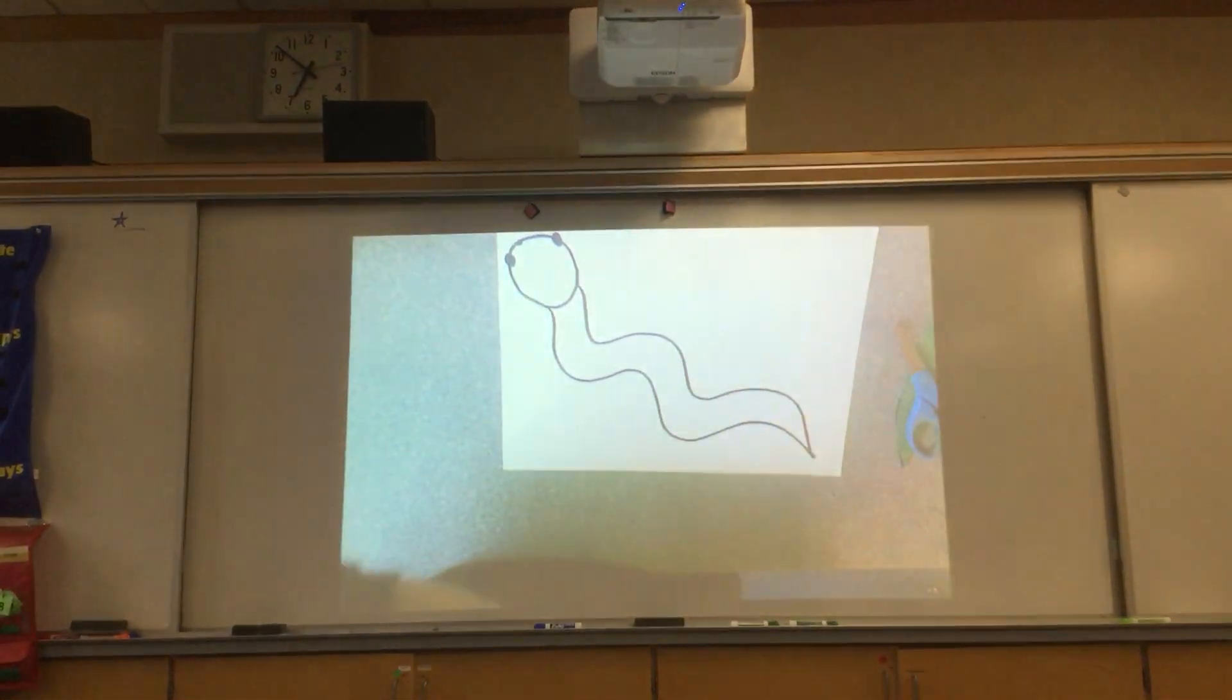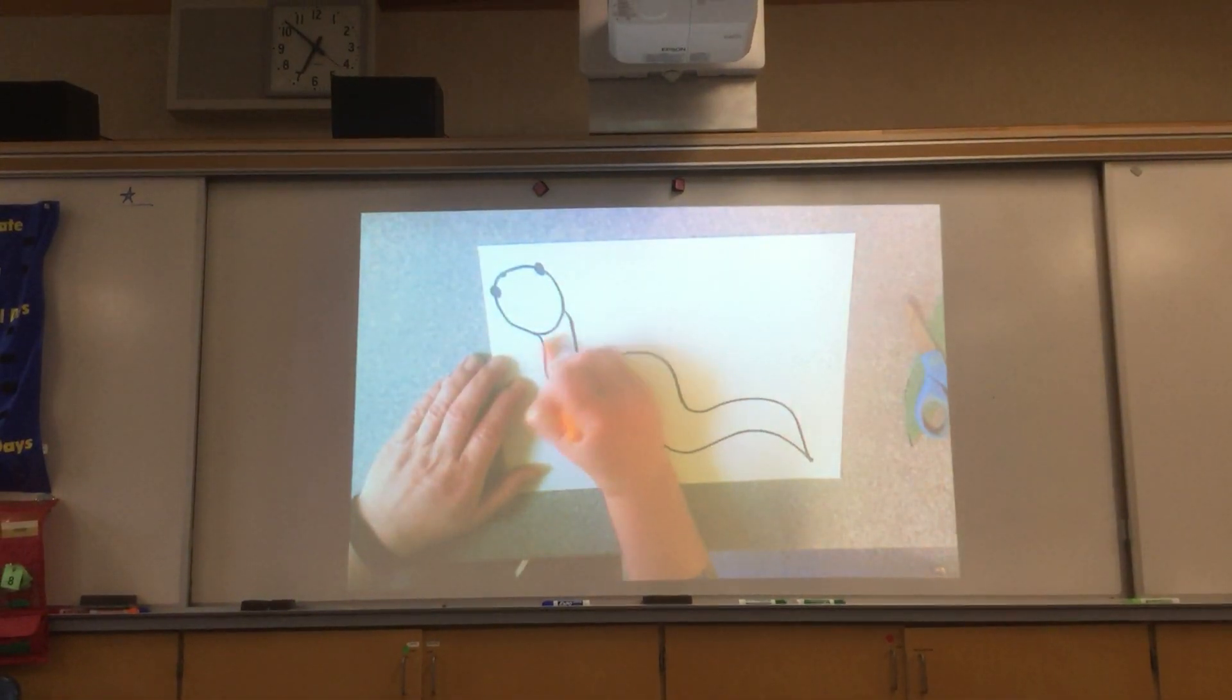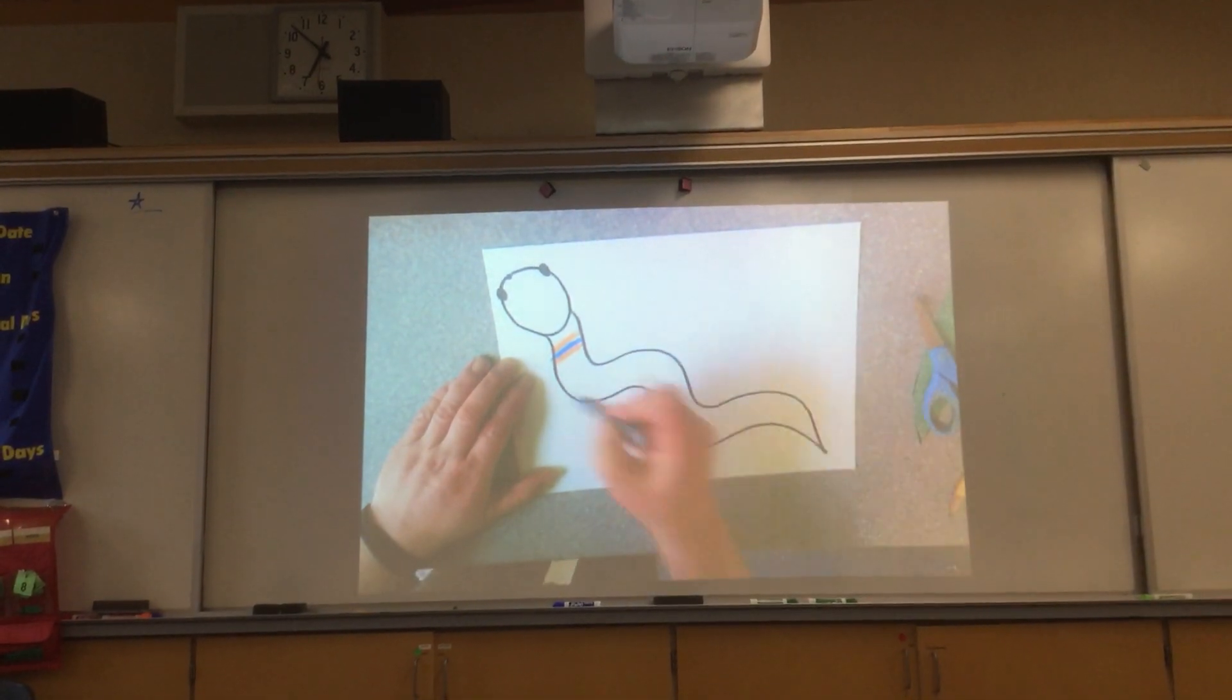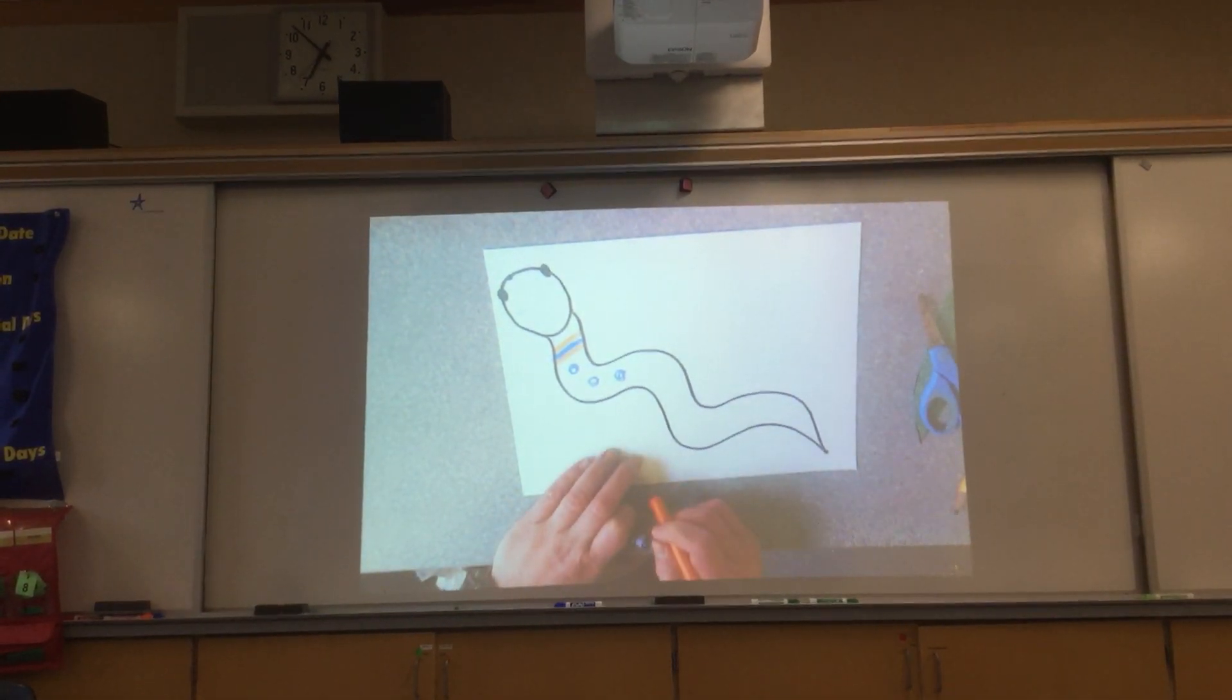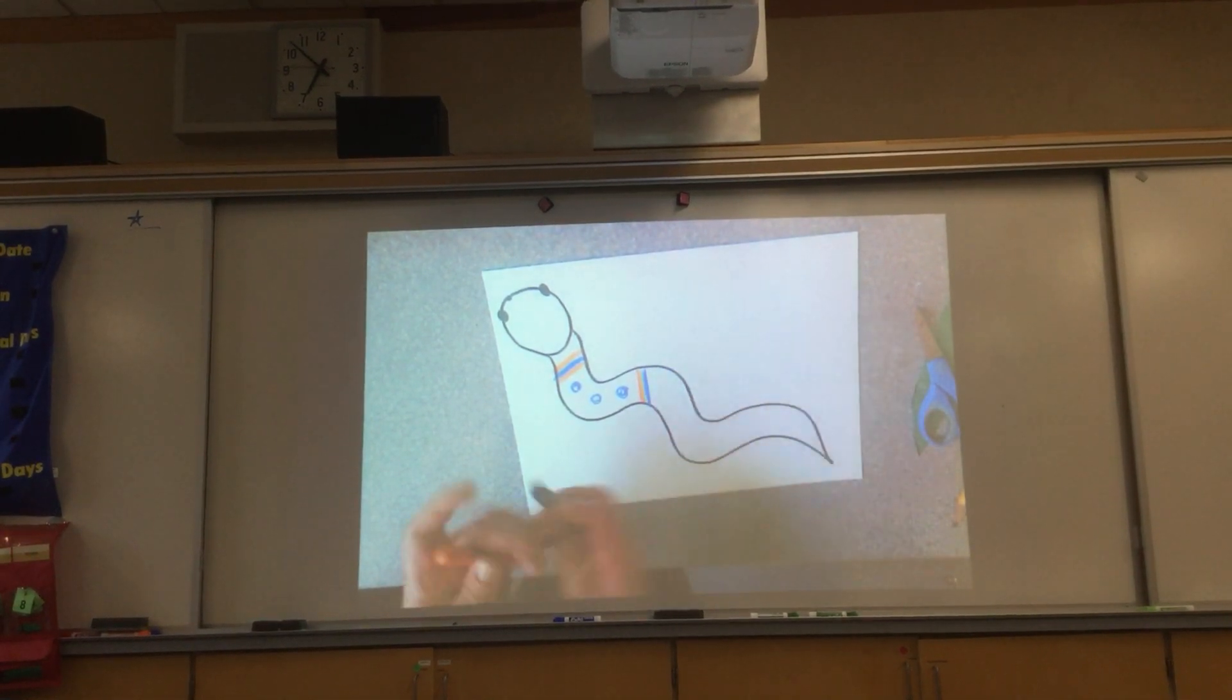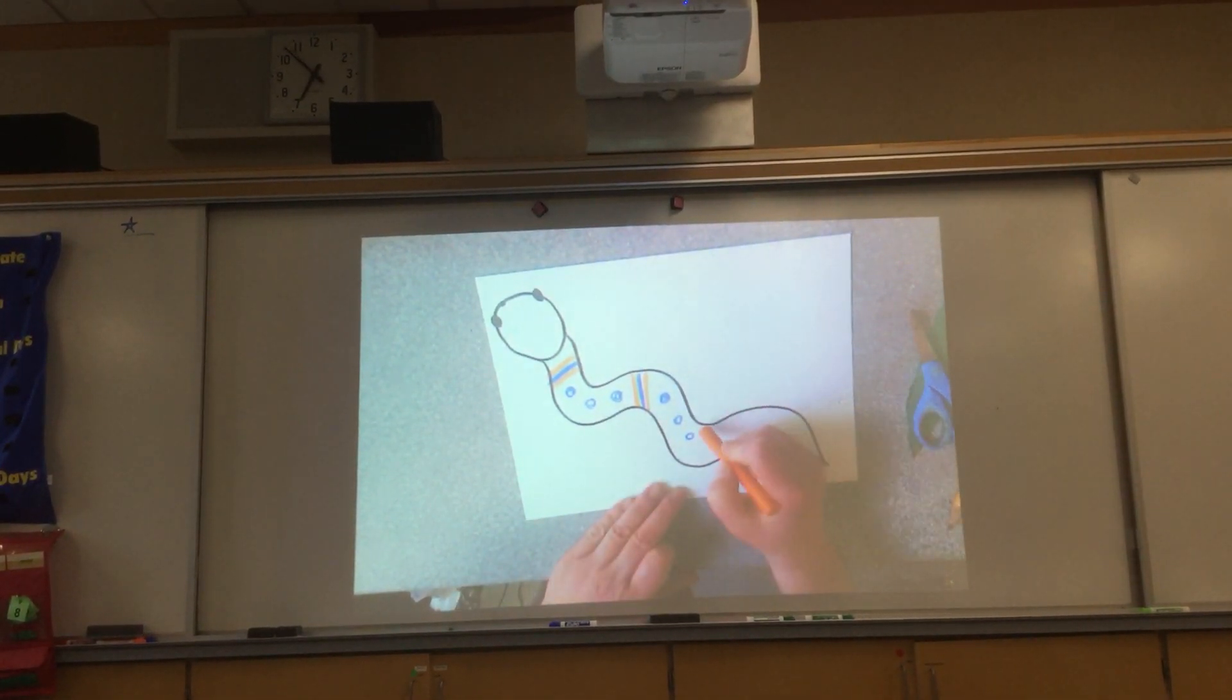Then, you get to make a pattern on your snake. Now, you can do your pattern any way you'd like to. I chose blue and orange for my pattern. So, what I'm going to do is I'm going to do an orange stripe. And then, a blue stripe. And then, an orange stripe. And then, I'm going to do three blue dots. What's going to come next? That's right, Ms. Kenyon, an orange stripe. Orange stripe. Then, what? A blue stripe. An orange stripe. And three blue dots. I'm going to finish that pattern all the way down my snake.